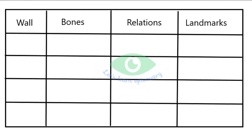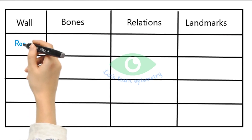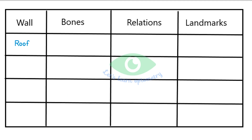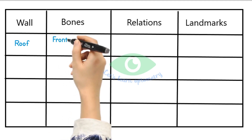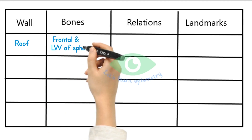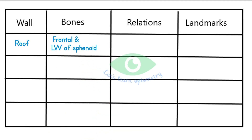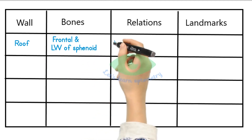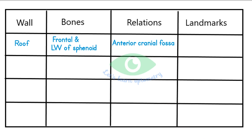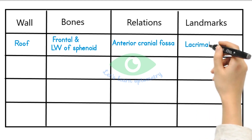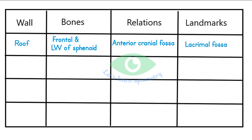Let's see each orbital wall and its relations in detail. The roof is the superior portion of the orbit. It is made up of the frontal bone and the lesser wing of the sphenoid bone. The frontal bone separates the orbit from the anterior cranial fossa. The important landmark of this wall is the anterolaterally located depression called the lacrimal fossa, where the main lacrimal gland is located.